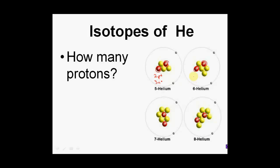The next one is definitely helium — it has two protons and four neutrons. The one after that has two protons and five neutrons. And lastly, two protons — which identifies it as helium — and six neutrons. So adding protons and neutrons: two plus three gives a mass number of five, two plus four gives six, two plus five gives seven, and two plus six gives a mass number of eight.